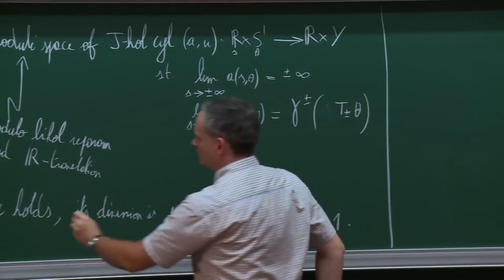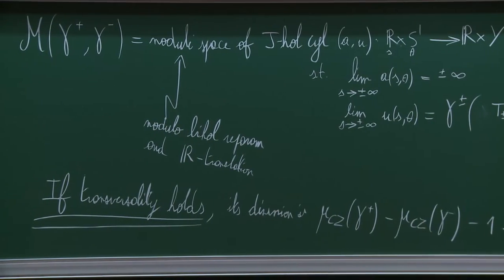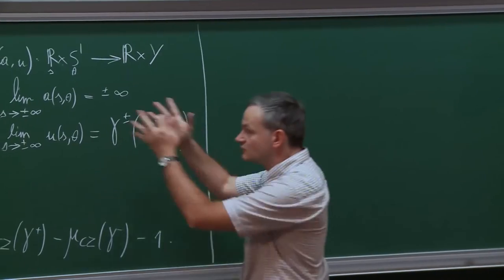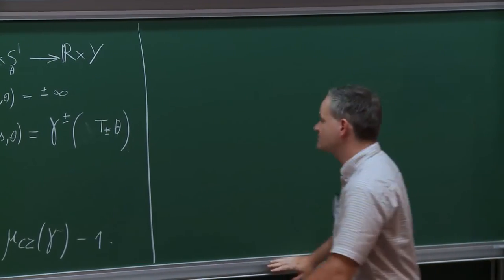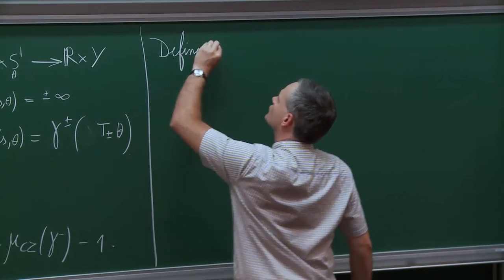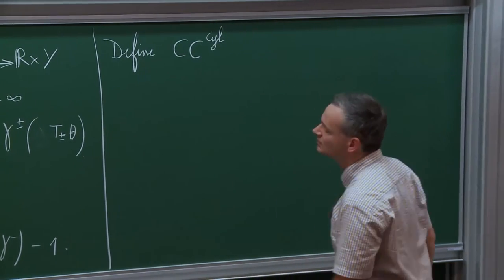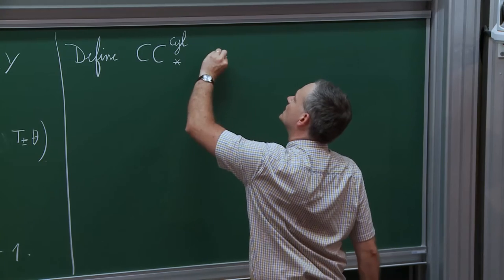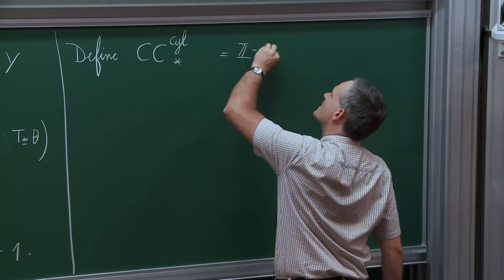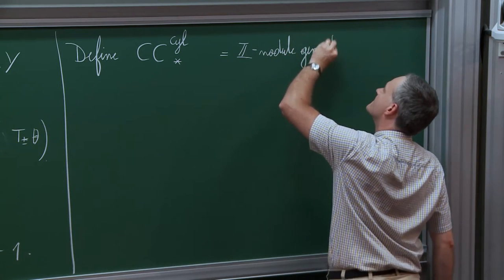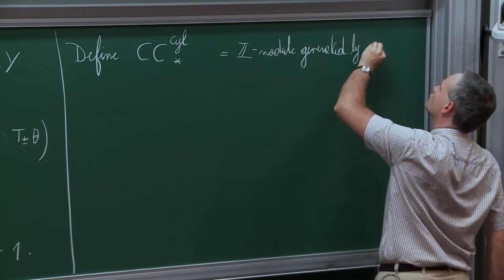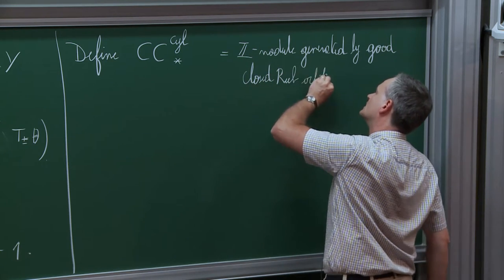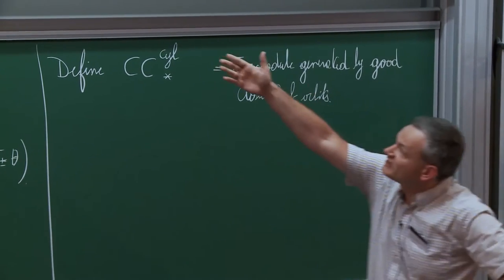Let me put aside this important restriction for now—I'll come back to it in a minute—and continue with the construction. Now that we have this analytical ingredient, we can construct some algebraic objects, maybe a chain complex. We can define the contact complex, or its cylindrical incarnation. The star will stand for grading of these things.